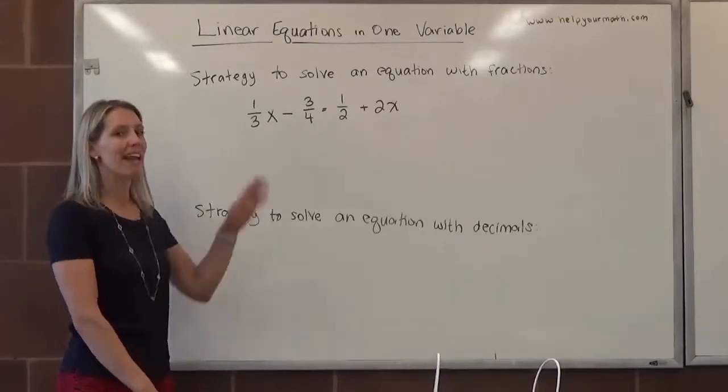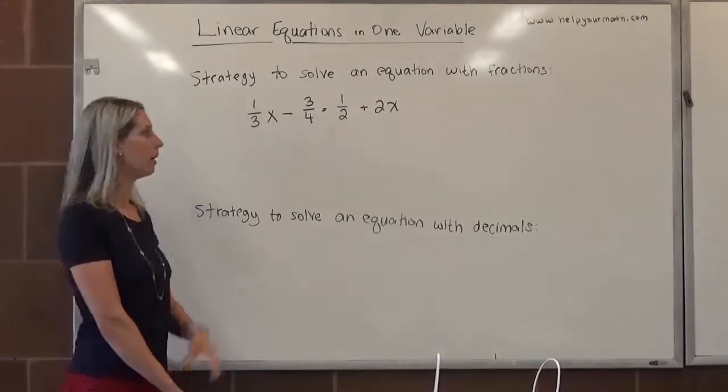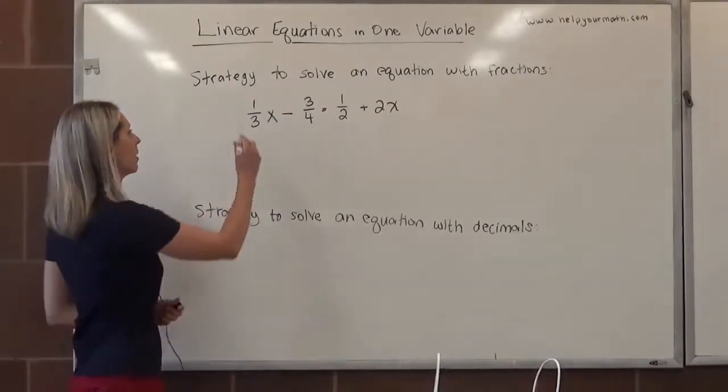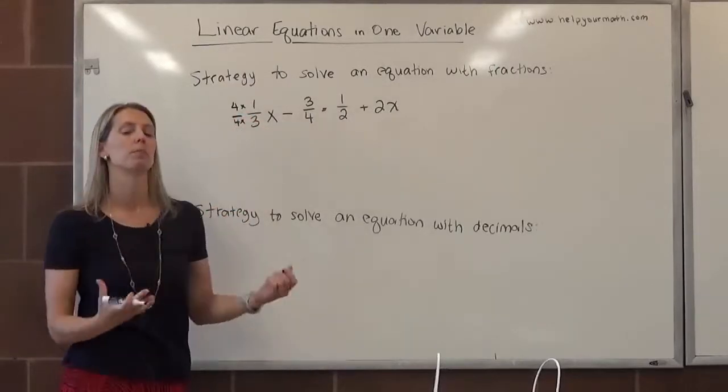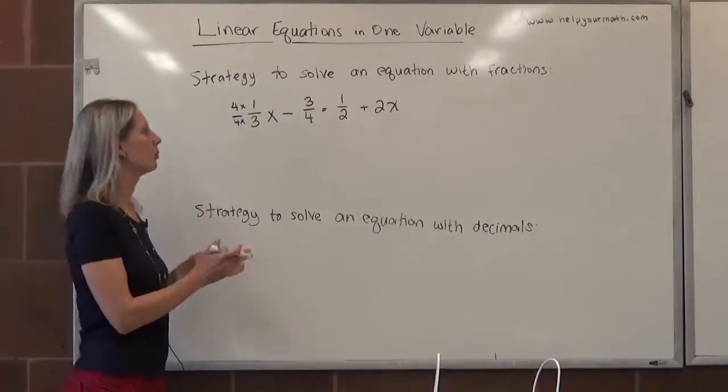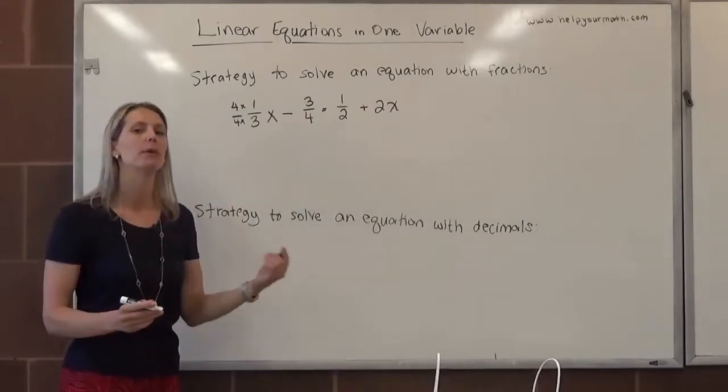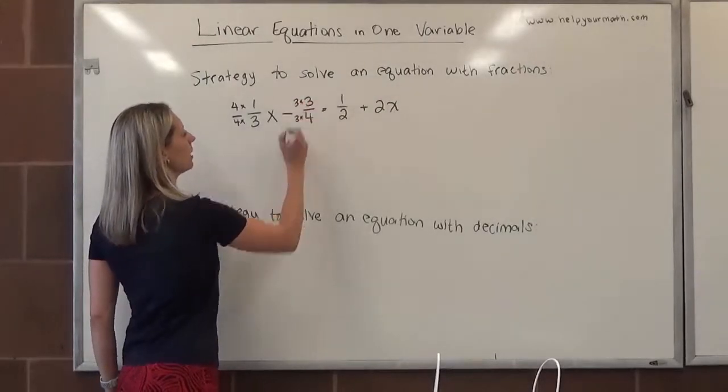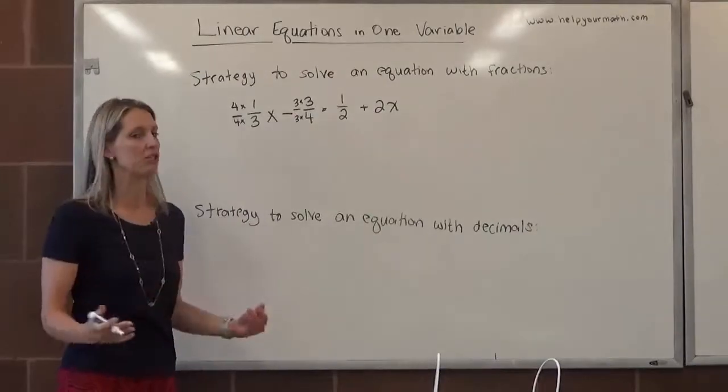So what we're going to do is rewrite every single term—and here there are four terms—to have a denominator of 12. What would I need to multiply 3 by to give me a denominator of 12? I would need to multiply it by 4. So we multiply by 4/4 because really what we're doing is multiplying by 1, which doesn't change the value of that fraction. 4/12 is equivalent to 1/3. Here, we need a denominator of 12. We currently have a factor of 4, so we multiply by 3/3. That's equivalent to 1, so we're not really changing that number.